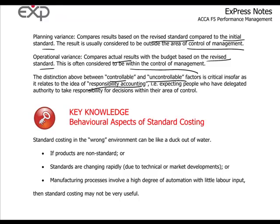For example, if the market size itself changes, that impacts the planning variance. Whereas the market share of the company would be an operational variance, because that is something management can influence.